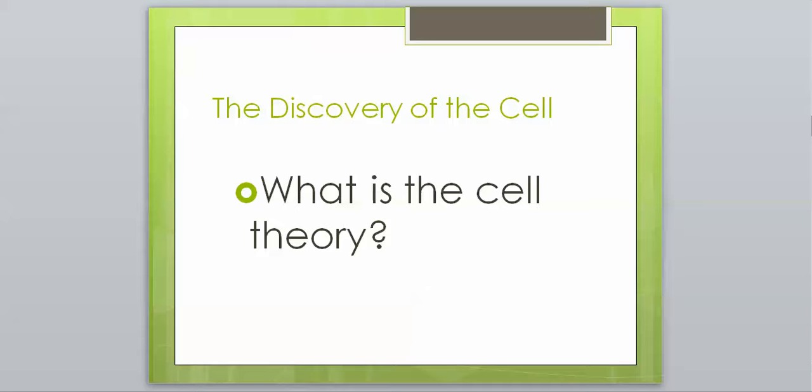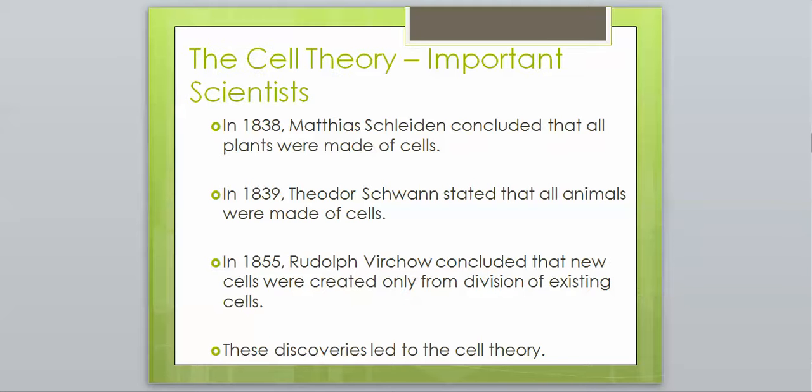After these people made some discoveries, we had a couple other people come along that helped make something called the cell theory. The scientists that were important in making the cell theory were Matthias Schleiden, and he was the first one that looked at plants and saw that they were made of cells.